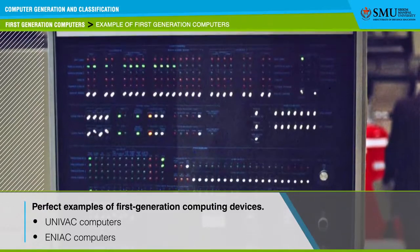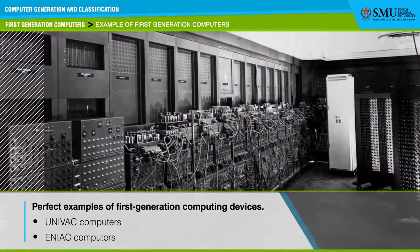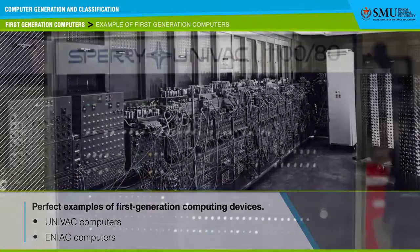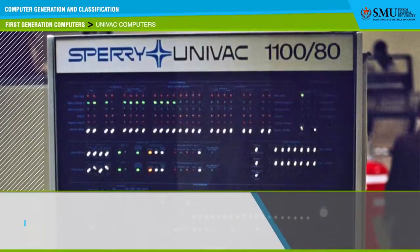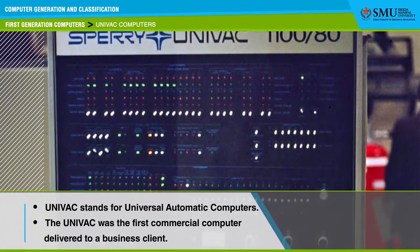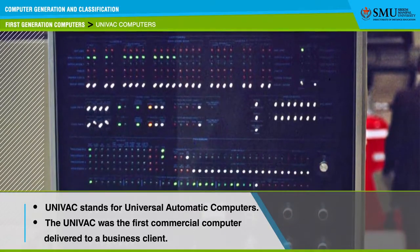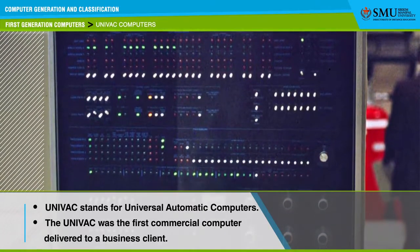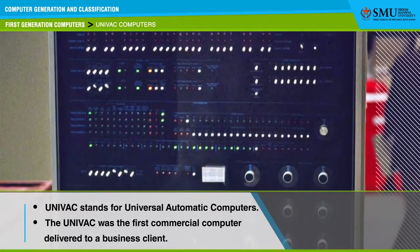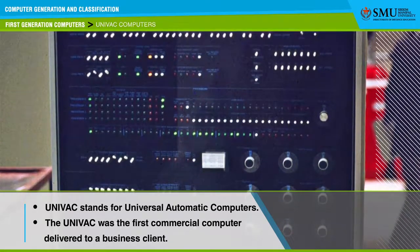Perfect examples of first generation computing devices are UNIVAC and ENIAC. UNIVAC stands for Universal Automatic Computers. The UNIVAC was the first commercial computer delivered to a business client, the US Census Bureau, in 1951.